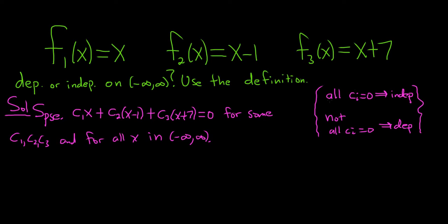So if now we find out that all of these are zero, then the answer is independent. And if they're not all zero, then it's dependent. So the next thing you do in this problem is basically you distribute the c's.